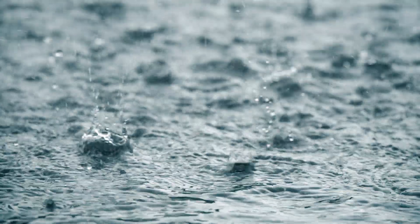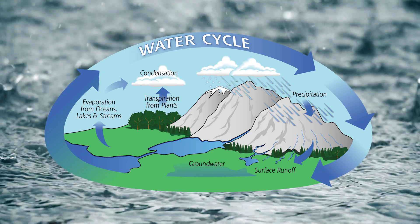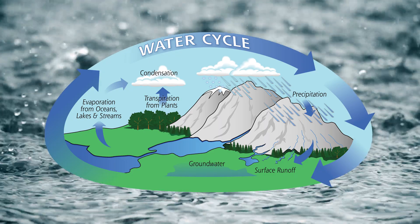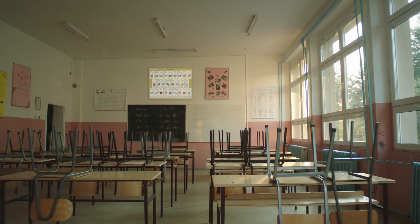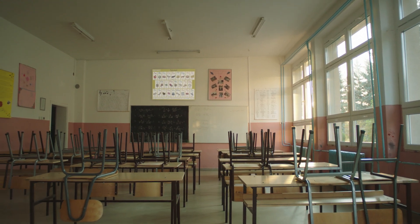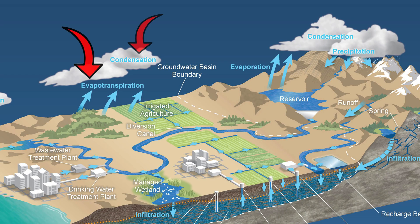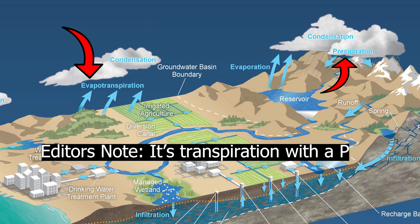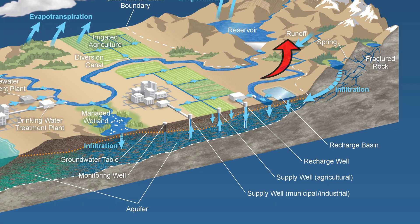While almost everyone learned about the water cycle in fourth grade science class, it has gotten a little fuzzy, so we're going to do a brief refresher course to better understand the severity of this issue. Most everyone likely remembers the basic steps like evaporation, condensation, transportation, and precipitation. However, the hiccups start around here, with the runoff, infiltration, and groundwater flow.